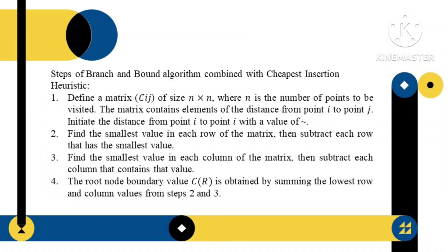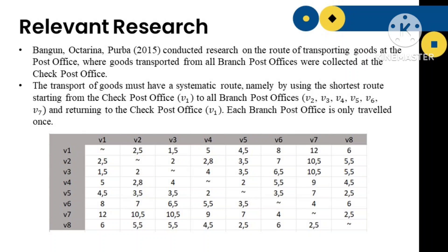The Branch and Bound algorithm breaks the problem into more manageable parts, which are then solved using branch and bound methods to achieve optimal results. Meanwhile, the Cheapest Insertion Heuristic algorithm works by inserting a new city into the temporary route that has the smallest insertion weight.